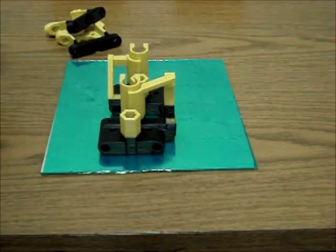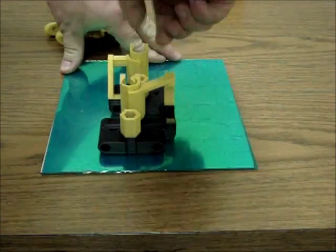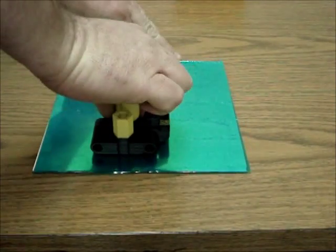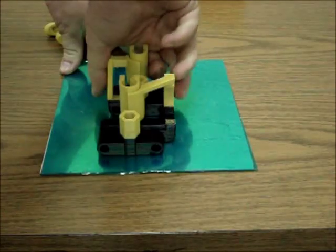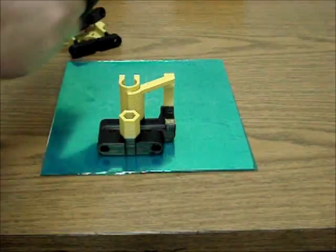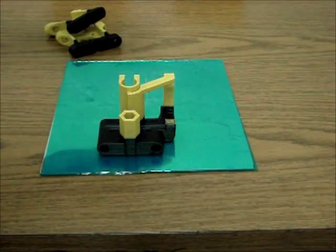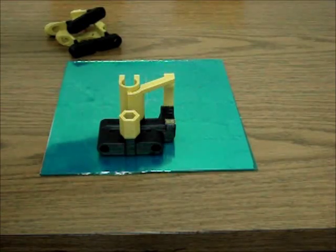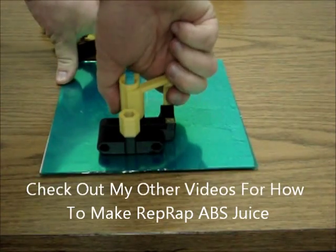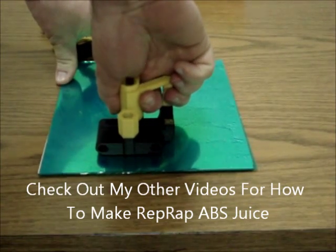So let's see if we can get these off. Some pieces are harder than others. Very flat parts are possible with ABS juice with this combination, and you really have to tug sometimes.